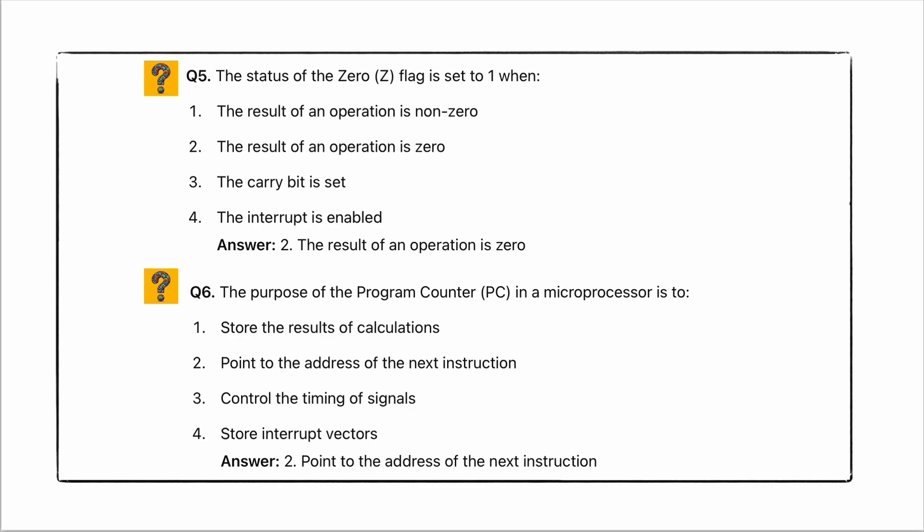Coming to the answer for the fifth question: the status of the zero flag is set to 1 when the result of an operation is 0 — option 2, answer is correct. The purpose of the program counter PC in a microprocessor is to point to the address of the next instruction — answer is correct, option 2.